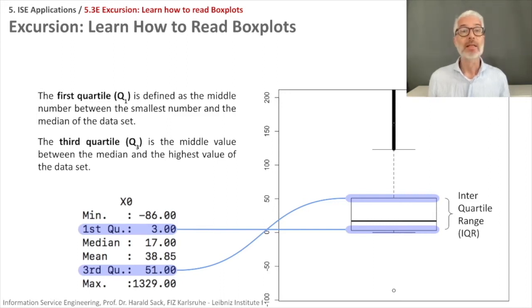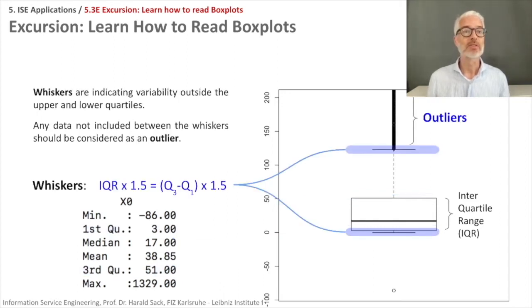So what then are these whiskers you see here? These whiskers are indicating variability outside the upper and lower quartiles. So any data not included between the whiskers should be considered as an outlier of your data.